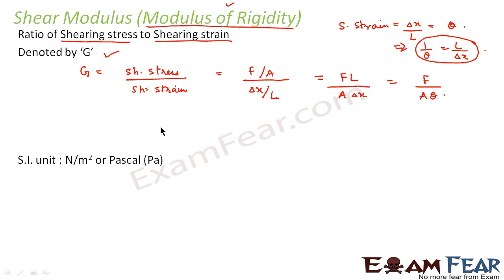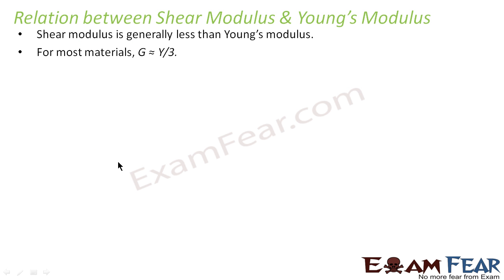This is how we generally express shear modulus mathematically. The SI unit is again Newton per meter squared because shearing strain is unitless. Shearing stress has the unit of force per unit area, that is Newton per meter squared or Pascal.